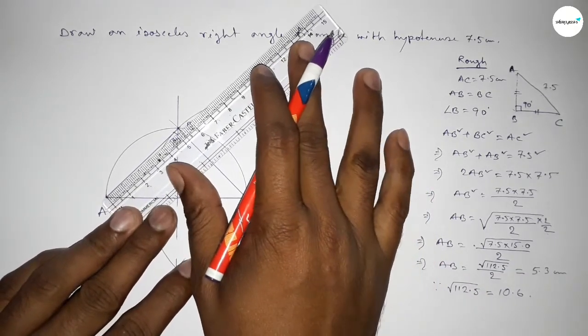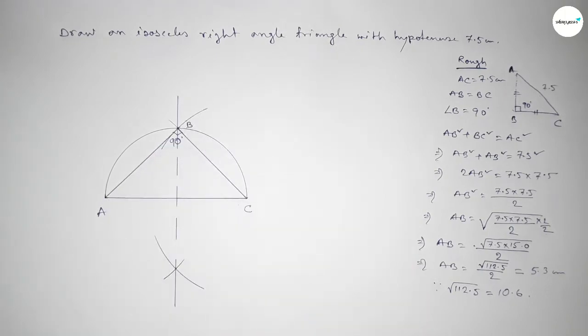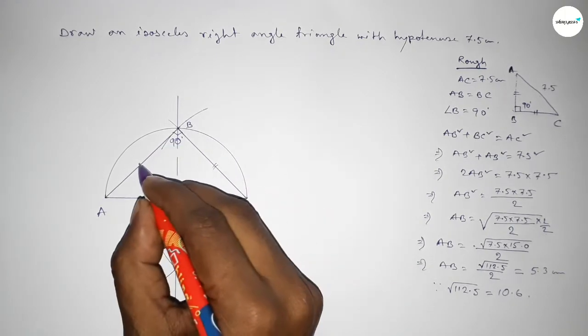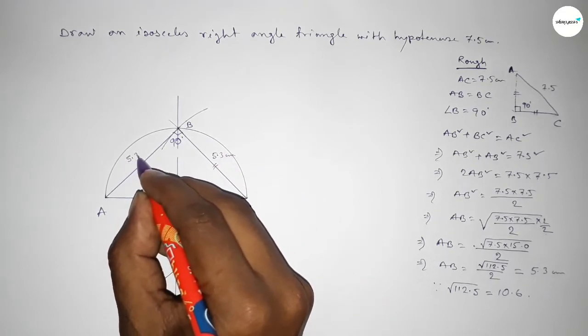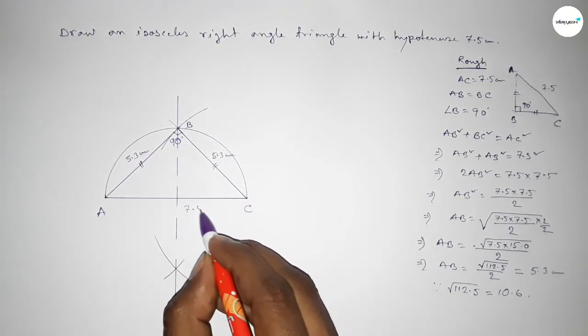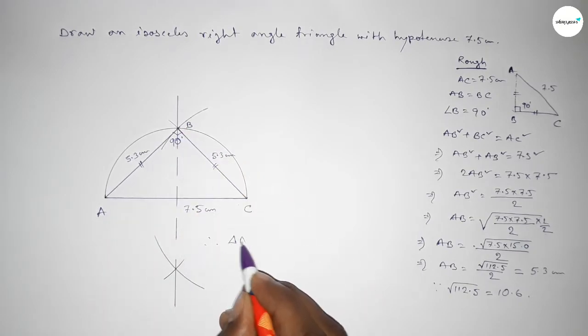So this is one, two, three, four, five, and this is 5.3. Again checking the side AB, so this is 5.3. So BC and AB are equal. So this is 5.3 centimeters approximately, this is 5.3 centimeters approximately, and AC equal to 7.5 centimeters.